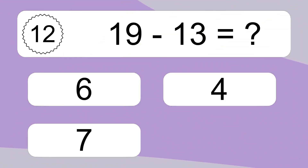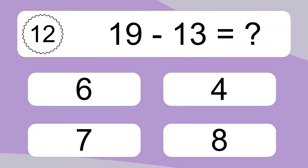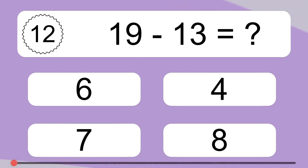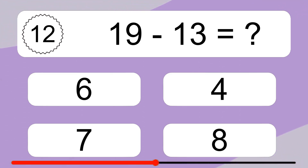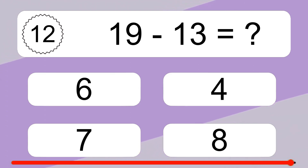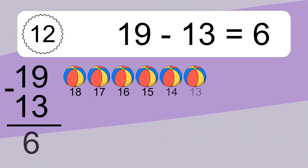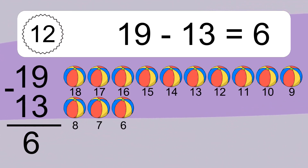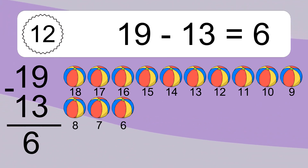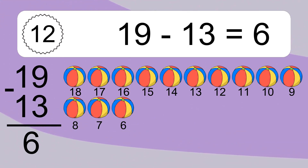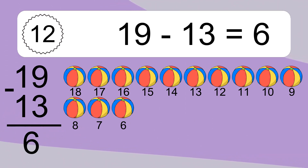19 minus 13 equals what? 19 minus 13 equals 6. Let's count it: 18, 17, 16, 15, 14, 13, 12, 11, 10, 9, 8, 7, 6.